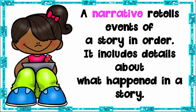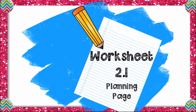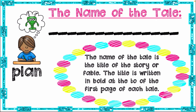Open your worksheet 2.1 and let's plan what we are going to write about. When planning, you put things into consideration. First, you need to know the title — the name of what you're writing about. The title is written in bold at the top of the first page. It should be catchy so readers are interested. For example, 'The Hot Dog' — a very interesting title. You also need to know who the characters are. List their names.